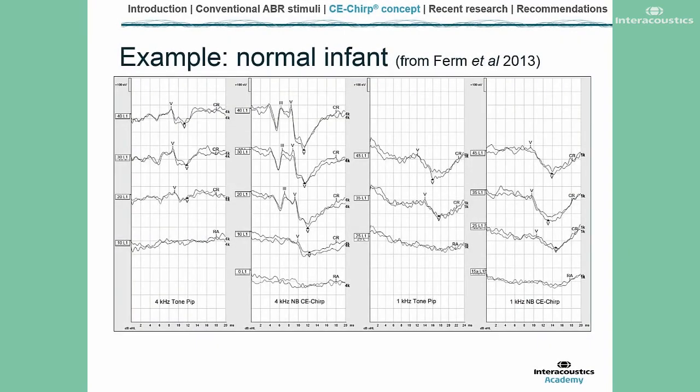Here is an example from some of the babies that I've tested. On the left-hand panel, you have the results from 4kHz tone pips and 4kHz chirps. You can see straight away that there is a difference in the amplitudes and that the responses of the chirp are considerably larger.